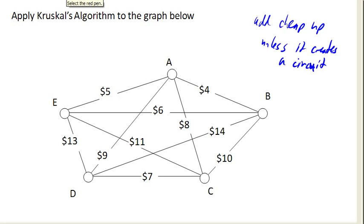So we'll go ahead and we'll start here. And we'll say the very cheapest edge is this one here. So we'll go ahead and add that one. Next cheapest is here. The next cheapest is here. But notice that that would be bad, because now we've got ourselves a circuit. So we're not going to add that one.